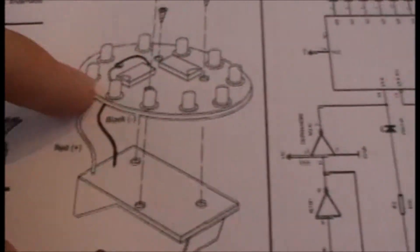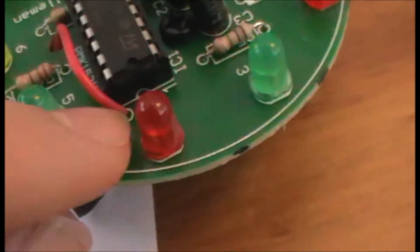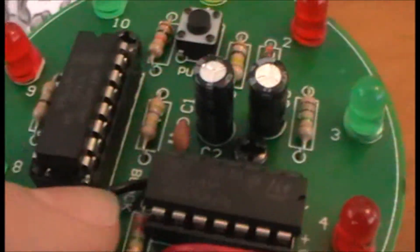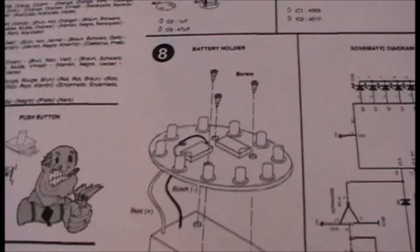And then there's the battery holder. You put the red lead through the positive side, which says red on it, and the black lead through the negative side, which says black and has a minus on it. Then screw it into the board and put your battery in.